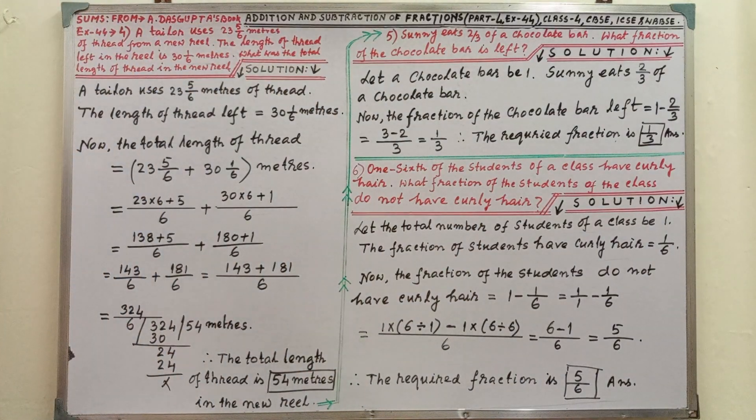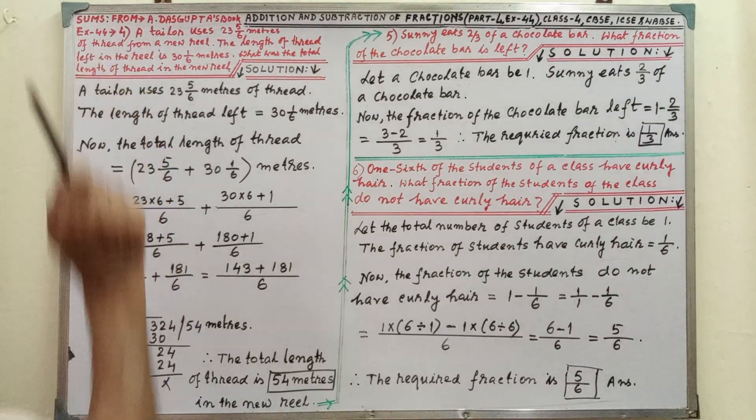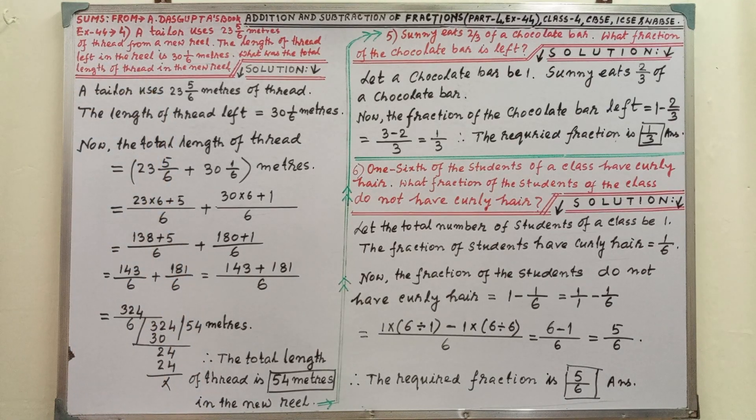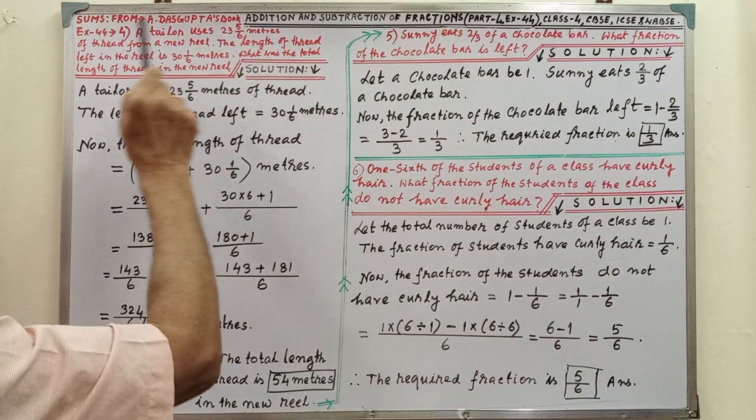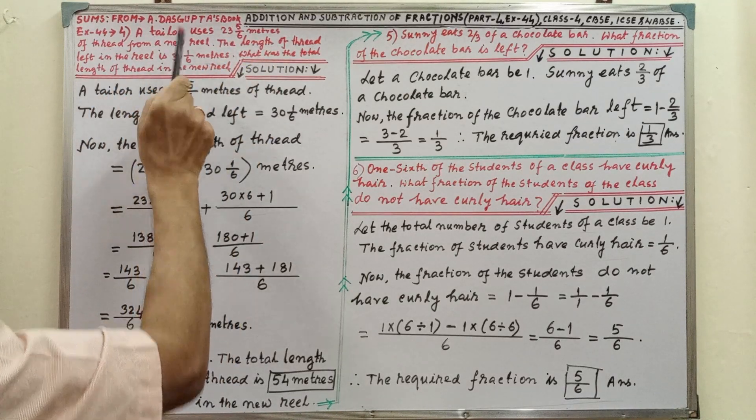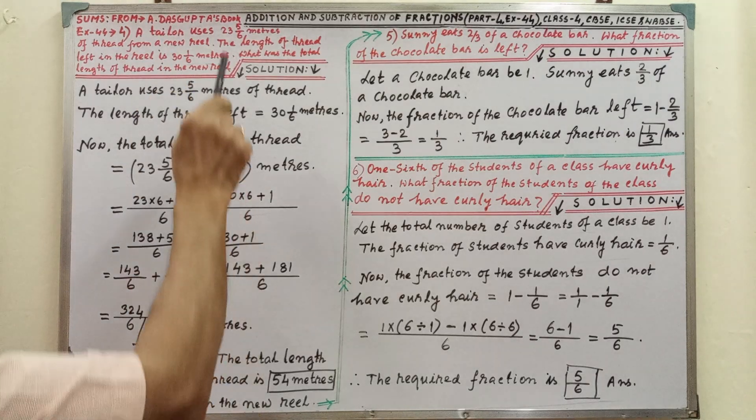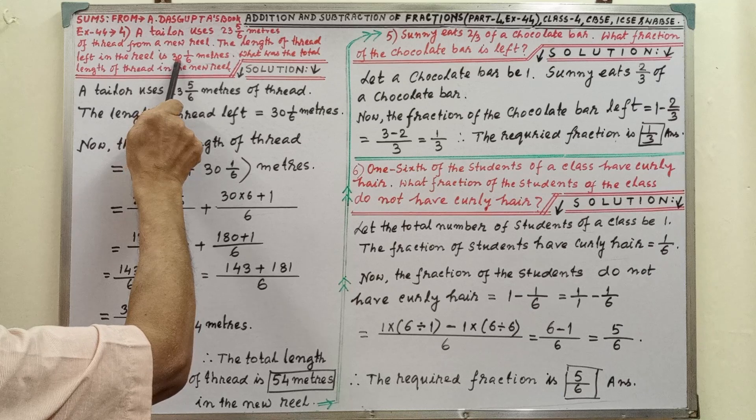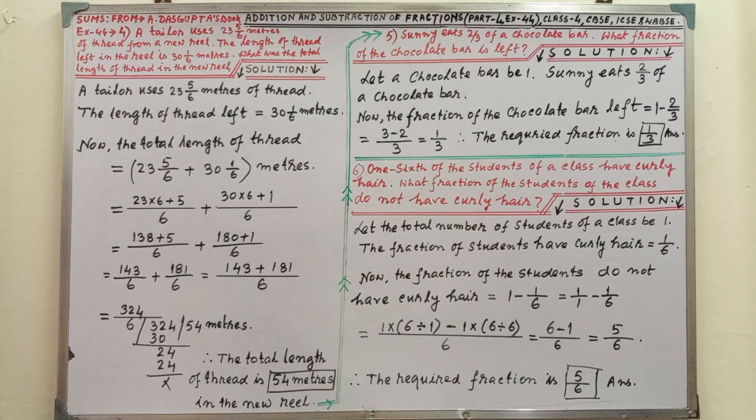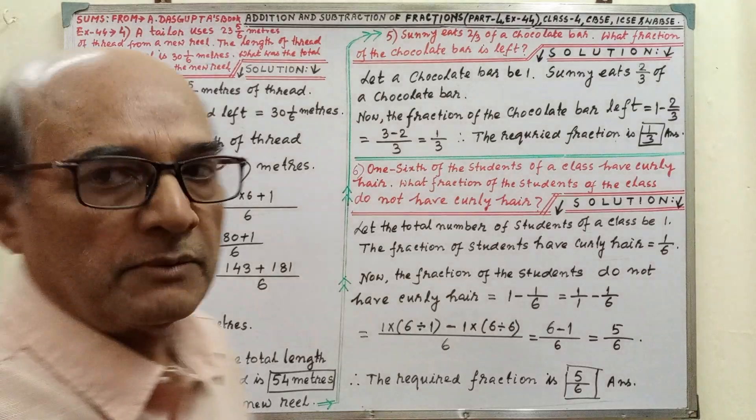Sums given from A. Dasgupta's book, exercise 44. What problems? Sums number 4. A tailor uses 23 and 5 by 6 meters of thread for a new reel. The length of thread left in the reel is this. What was the total length of the thread in the new reel?